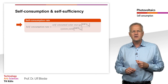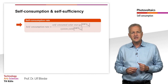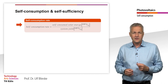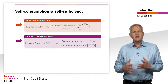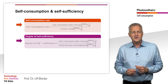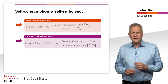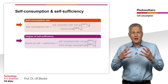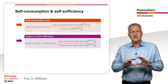Self-consumption describes the share of the generated PV energy that is consumed directly on site. In addition to self-consumption, sometimes the degree of self-sufficiency of a system is also specified. The degree of self-sufficiency describes the share of self-consumed solar energy in the total energy consumption.